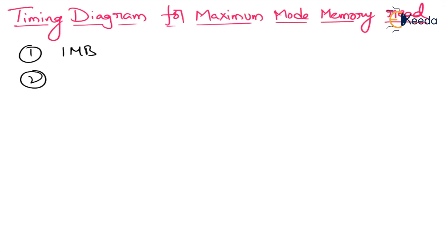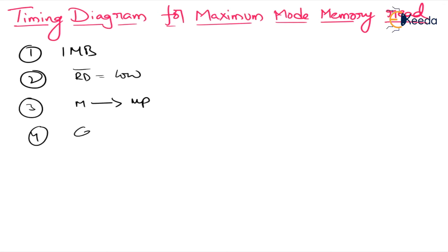The second step is the processor indicating it is performing a read operation — we perform this by putting RD bar low. The third step is propagation time, meaning data transfer from memory to microprocessor. The fourth step is the processor capturing the data. These are the four steps we need to know about timing diagrams.